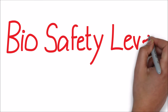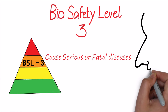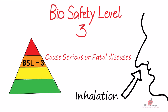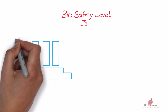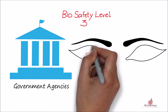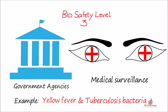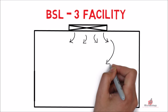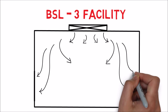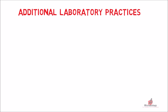Biosafety Level 3 includes microbes or agents that can cause serious or potentially fatal diseases through inhalation. BSL-3 facilities are usually under the control of government agencies, and the laboratory staff is under medical surveillance. Examples of BSL-3 microbes include yellow fever and the bacteria that cause tuberculosis. BSL-3 facilities should maintain unidirectional airflow from clean air to infectious air, and recirculation of air happens through HEPA filters. Additional laboratory practices must include the following.